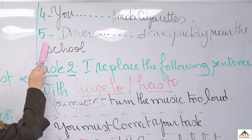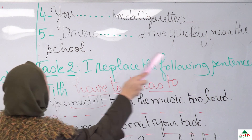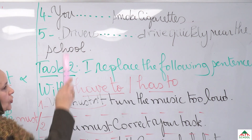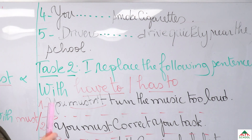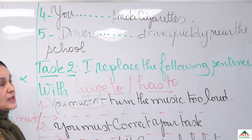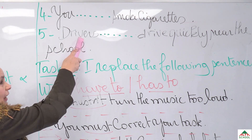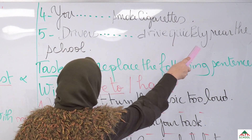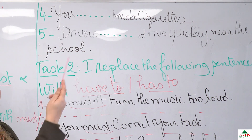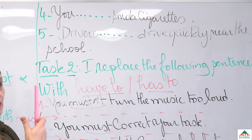The fifth sentence: 'Drivers blank drive quickly near the school.' Drivers means the person who drives a car — for example, a Ford Fiesta or a Clio. So the person who drives the car is called a driver. Think about it and do it. I'm sure you are going to have good answers.